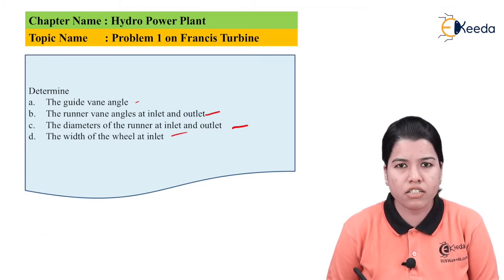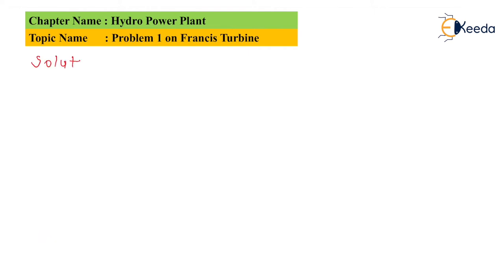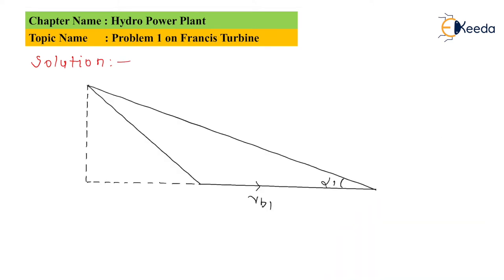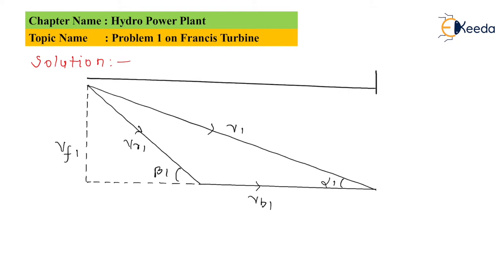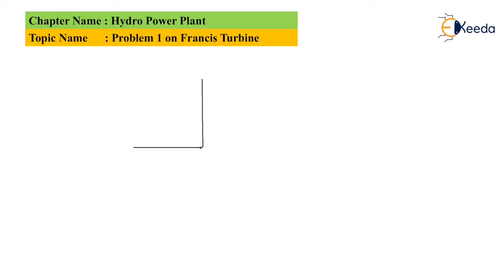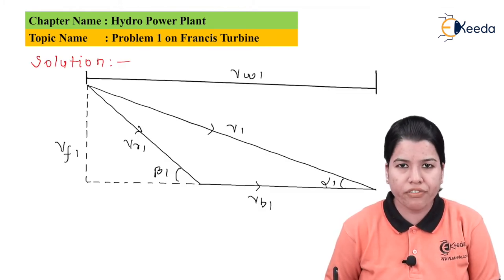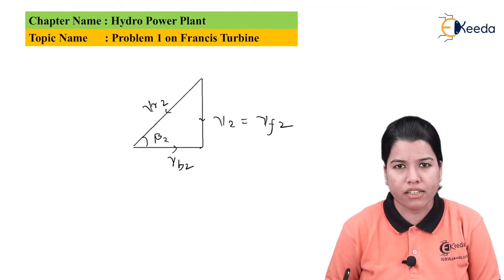The velocity triangles for the Francis turbine can be drawn as follows. These are the triangles related to the Francis turbine — this is the first triangle and this is the second triangle.